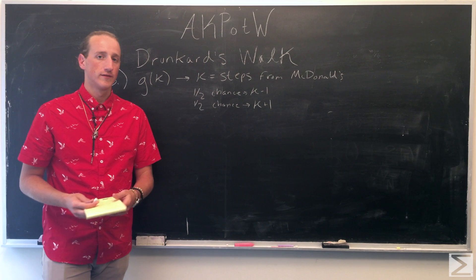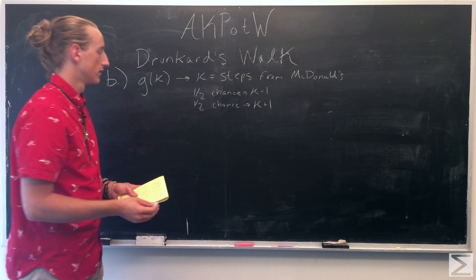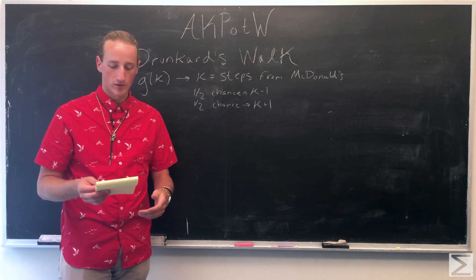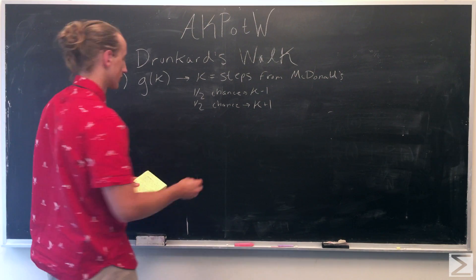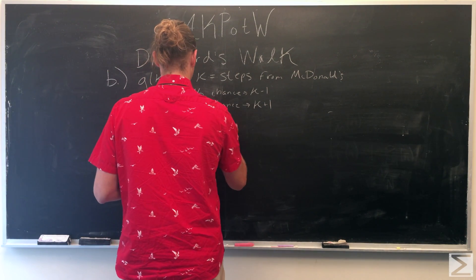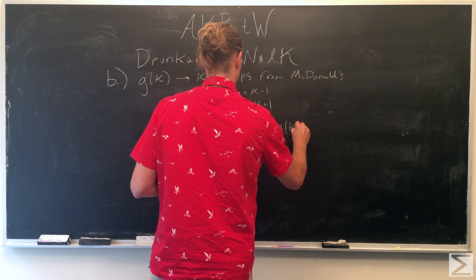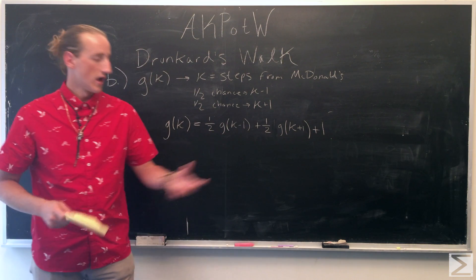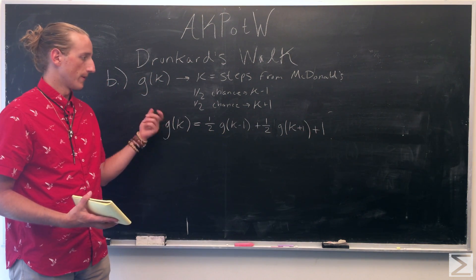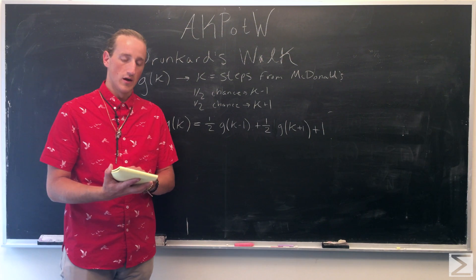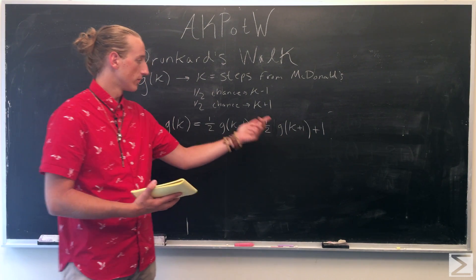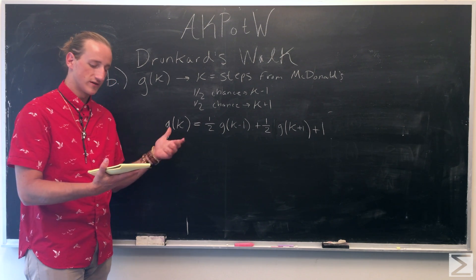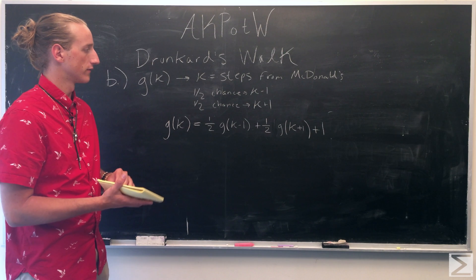Knowing this, we can form a recurrence equation for g of k. It has a one-half chance of being at k minus 1 and a one-half chance of being at k plus 1, and we add 1 because he took one step. So once that's known, we have this recurrence relation to work with.